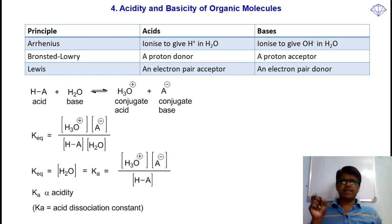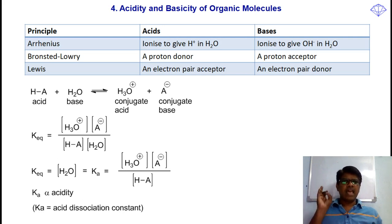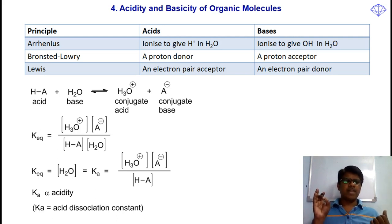The second theory is Bronsted-Lowry theory. According to Bronsted and Lowry theory, a proton donor is an acid and a proton acceptor is a base.